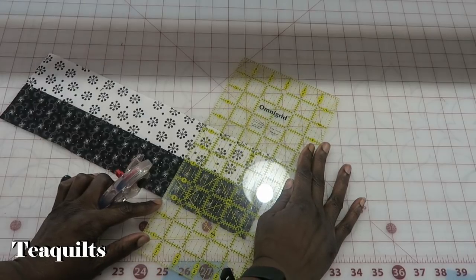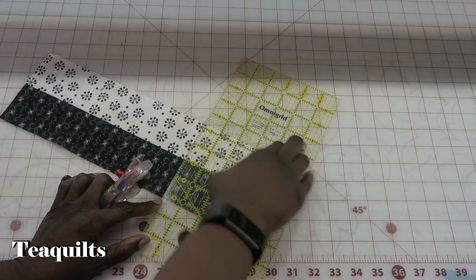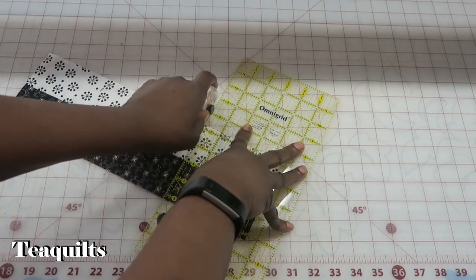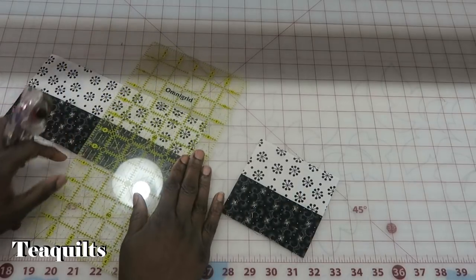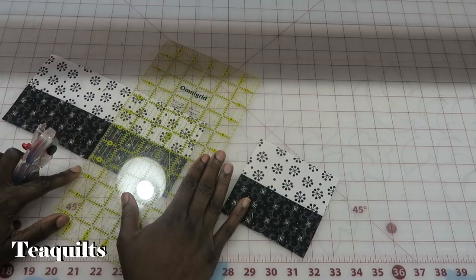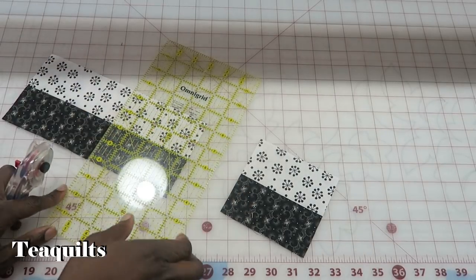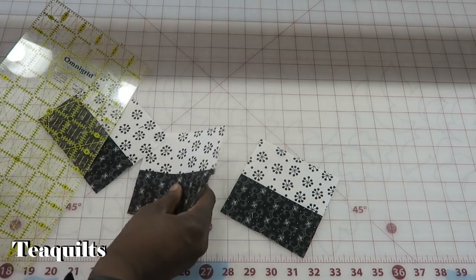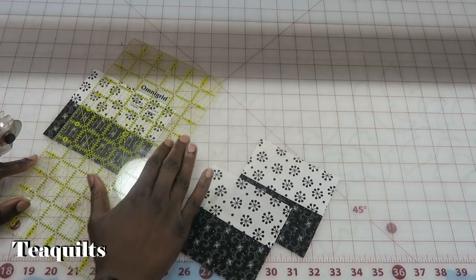And again I can use any line on the ruler to square up. This is two and my final cut here.